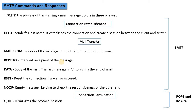Next is RSET, which resets the connection. If there is an error, the connection is reset using this command. Next is NOP — this sends an empty message to the other end to check whether it is available or responsive, used in between the mail transfer.